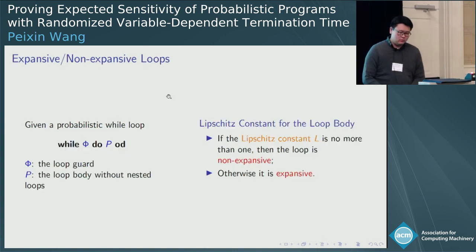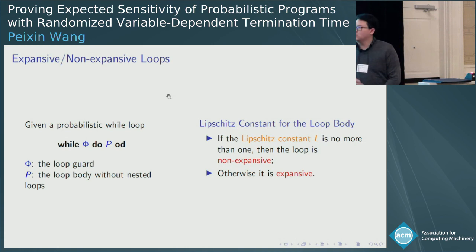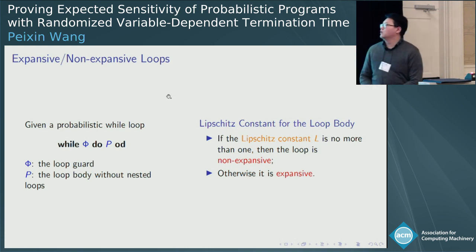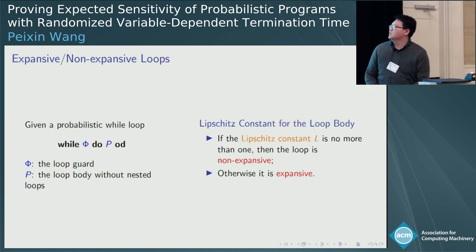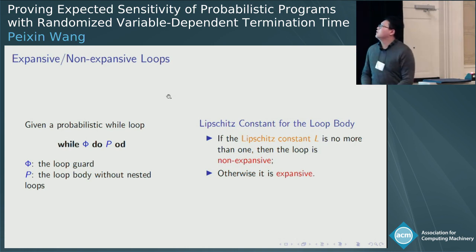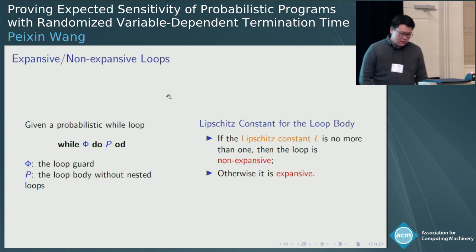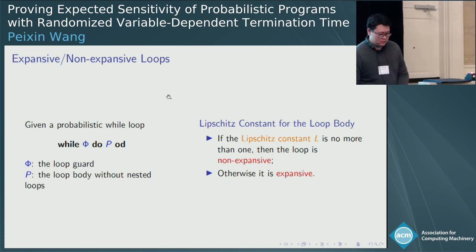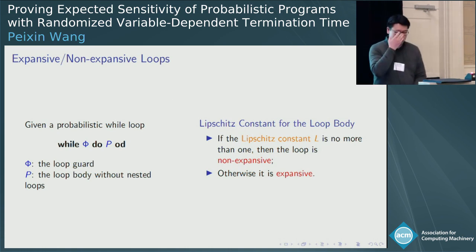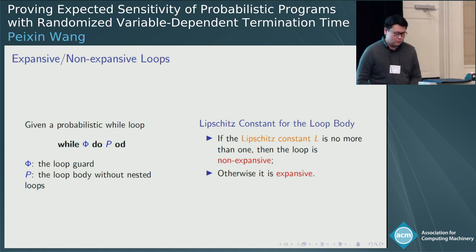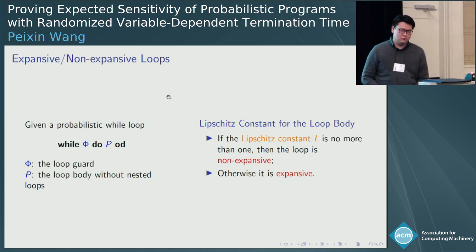We also recall the loop body P is L-continuous. And if the constant L is no more than one, we call it non-expansive; otherwise we call it expansive. So we define two types of loops accordingly.